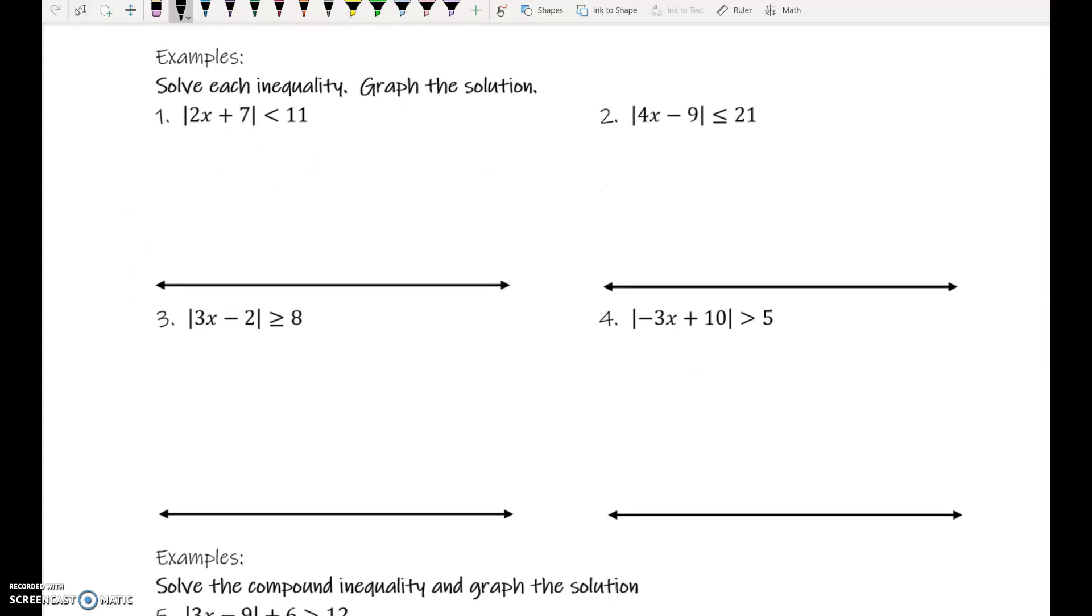Number one, I apologize, there's not a ton of space here, but we will get it figured out. Number one is less than. So, over here on the left, I'm going to write less and. An and inequality is a three-piece inequality. Smaller number, less than stuff, less than bigger number. We get that smaller number by taking the opposite of the right side. So, negative 11 is less than 2x plus 7 is less than 11.